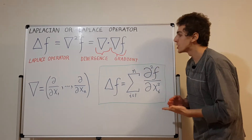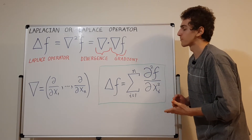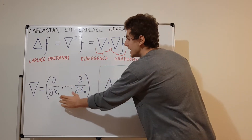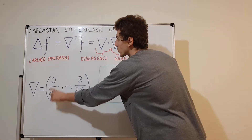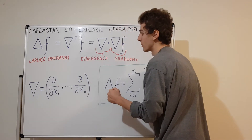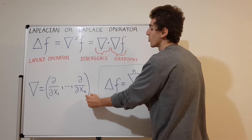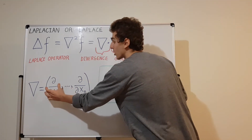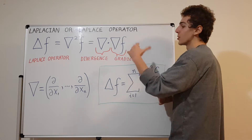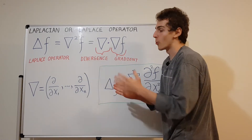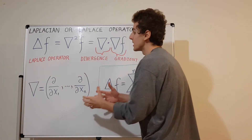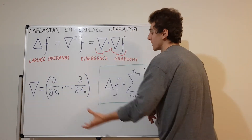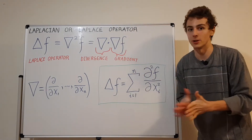The Laplacian is the divergence of the gradient. The del operator in n-dimensional Euclidean space consists of the partial derivatives with respect to each coordinate: x1, x2, x3, up to xn. You can think of it as a kind of vector whose components are not scalars but partial derivatives with respect to x, y, and z — generalizing to n dimensions.